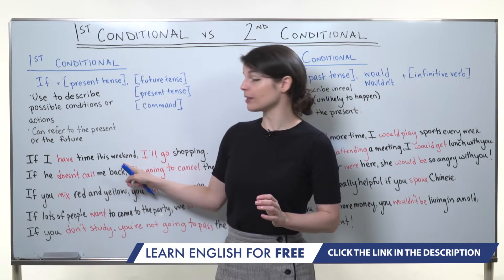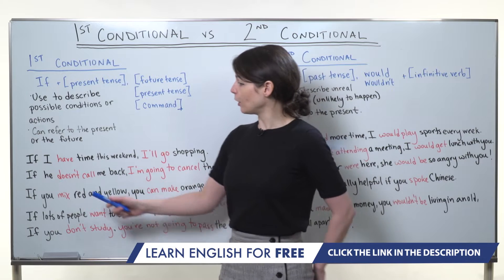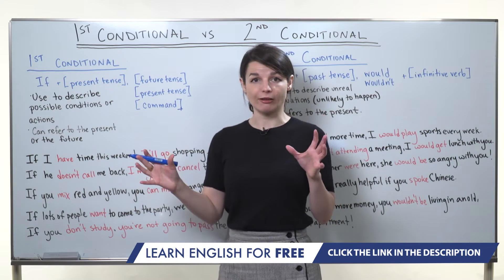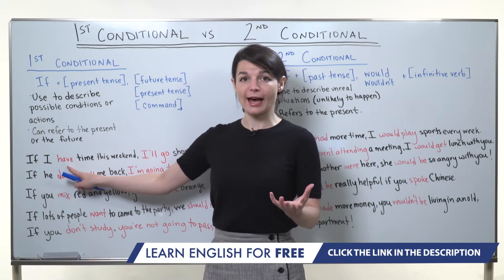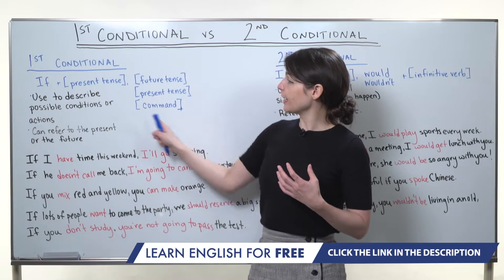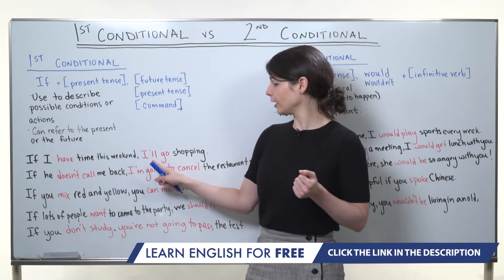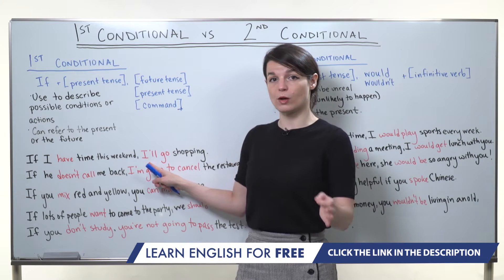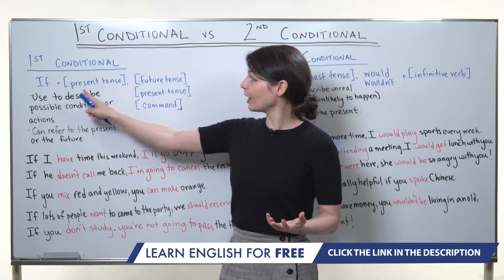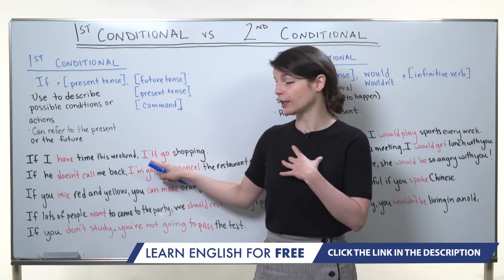Let's look at examples. First: 'If I have time this weekend, I'll go shopping.' The if clause is 'if I have time this weekend' — the verb 'have' is in present tense. The second part, the main clause, is 'I'll go shopping.' 'I'll' is the reduced form of 'I will,' a future tense expression. So I'm describing a possible action in the future.